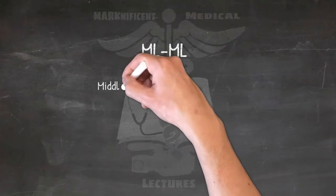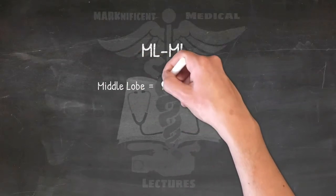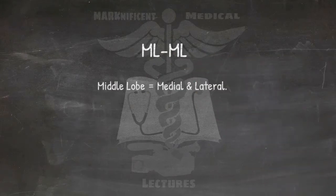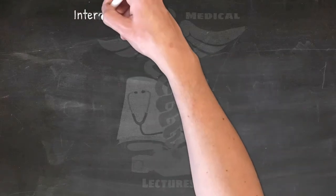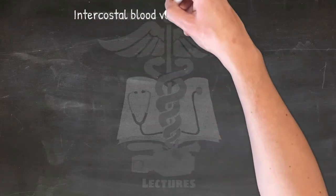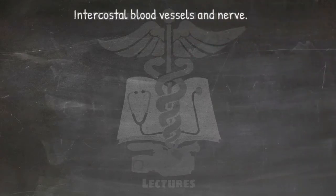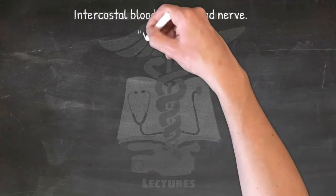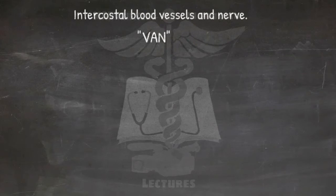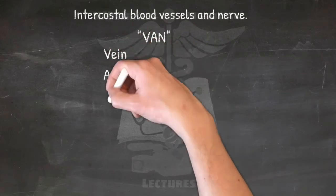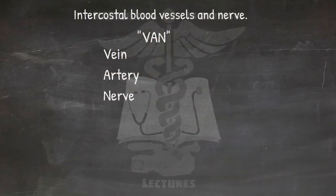The segments of the right middle lobe are medial and lateral. For the order of intercostal blood vessels and nerve in the costal groove of the ribs, from superior to inferior: VAN — vein, artery, and nerve.